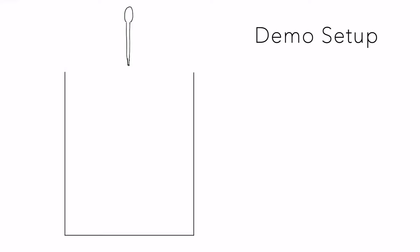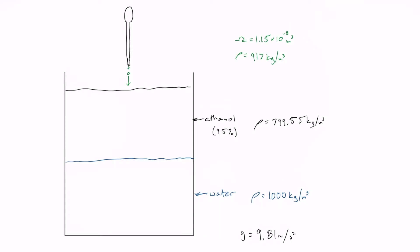To study this, we set up a system using water layered with 95% ethanol. Using oil with an approximate volume of 1.15 times 10 to the negative eighth meters cubed and a density of 917 kilograms per meter cubed, we were able to suspend droplets between the water and ethanol, which have densities of 799.5 kilograms per meter cubed and 1000 kilograms per meter cubed. In our calculations, we used a g-value of 9.81 meters per second squared.